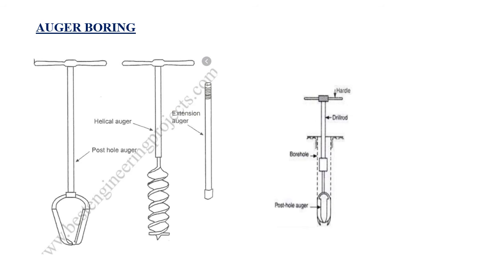Today we will be covering only auger boring. The main tool is what we call the auger. There are two different types commonly used: the helical auger and the post hole auger. These are the two types of augers normally employed for drilling into the ground and collecting the samples. In the case of the post hole auger, the sample gets collected in the open space of the auger, and for the helical auger, if a proper casing is used while drilling into the subsoil, you will also be able to retrieve soil samples.